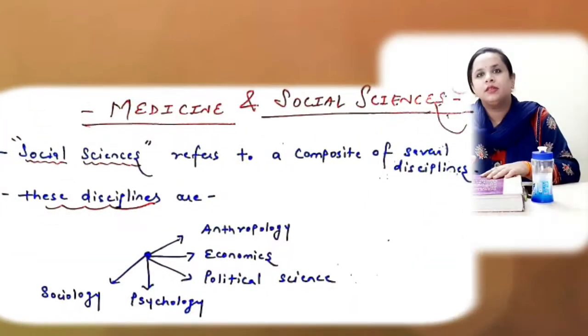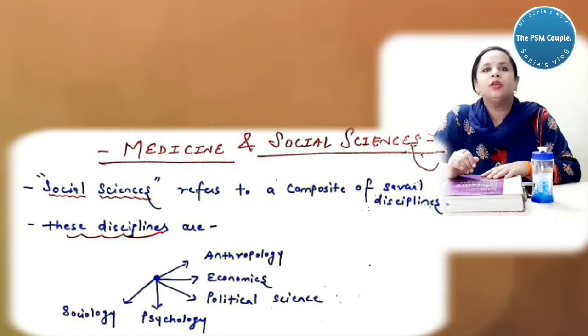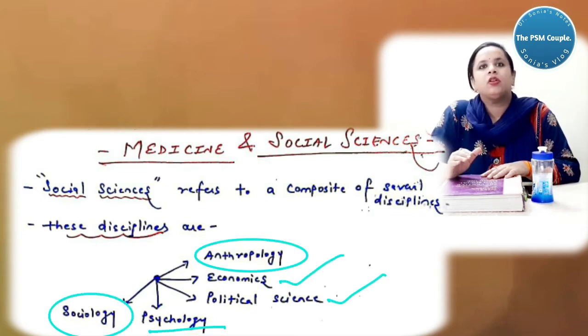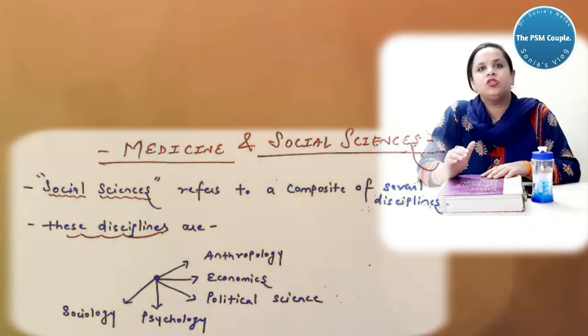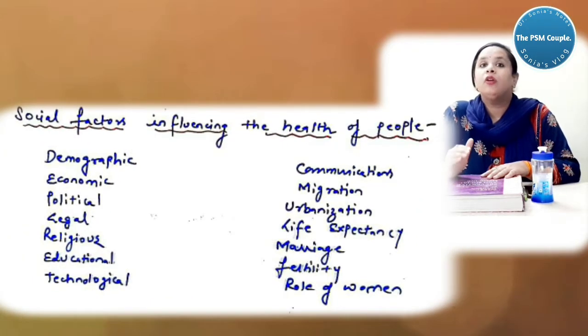Social Sciences refers to a composite of several disciplines. The disciplines of Social Science are Anthropology, Economics, Political Science, Psychology and Sociology. These are the disciplines which come under the Social Science. Now what are the social factors which influence the health of people?